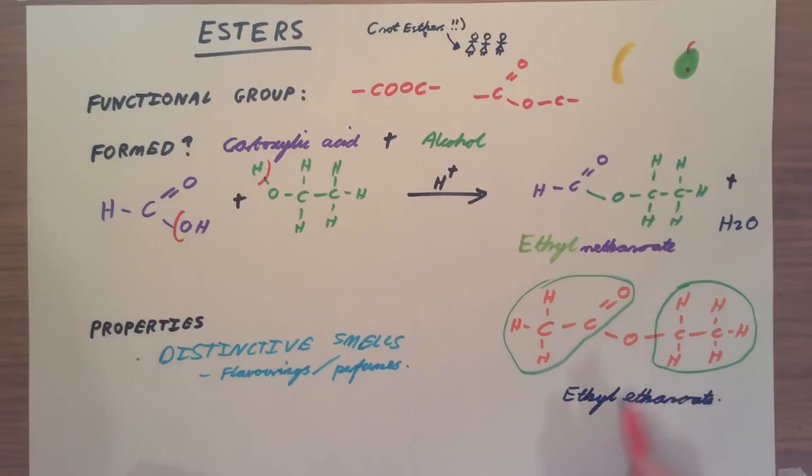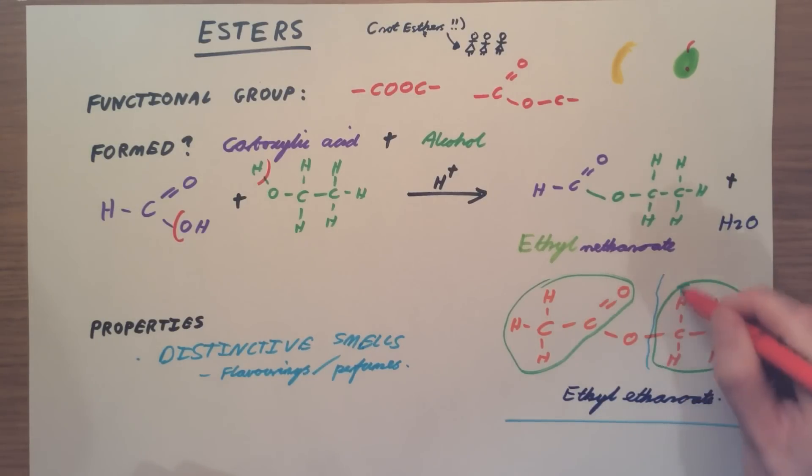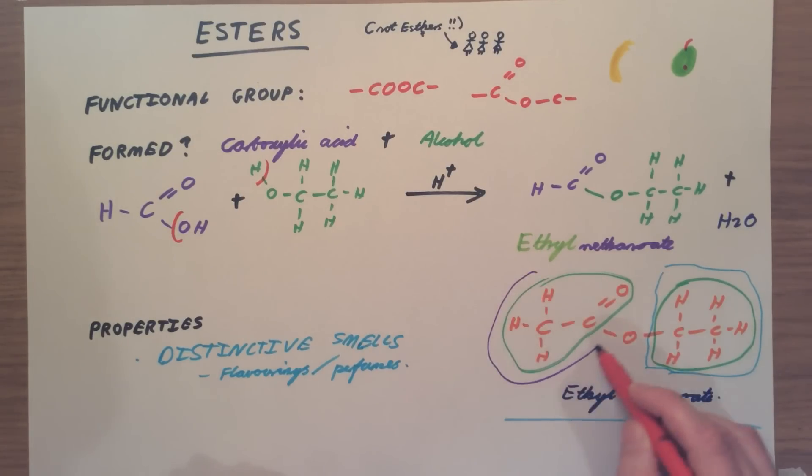Remember the one you really need to know is ethyl ethanoate. However, when you are naming them, if you are asked to name one, you always start with the group section that comes from our alcohol first and use your naming rules for that. And you follow that by naming the section that comes from your carboxylic acid.